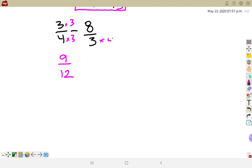And that gives me now 9 over 12. On the right, I'm going to multiply top and bottom by 4, and that gives me 32 over 12. And so this one is going to give me now, I've got 9 minus 32.